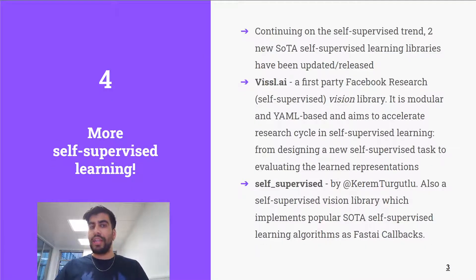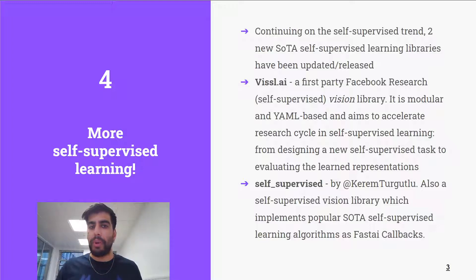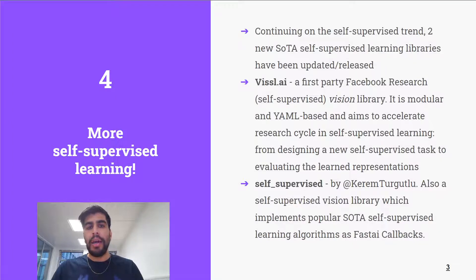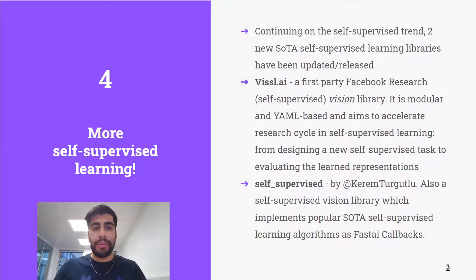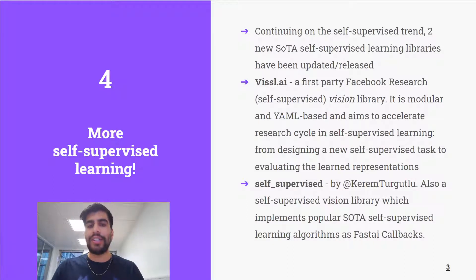On the topic of self-supervised learning, two new state-of-the-art self-supervised learning libraries have been updated or released. The first is Vissl.ai, a first-party Facebook Research self-supervised vision library. It's modular and YAML-based, which means you probably won't be writing any low-level code, and it aims to accelerate the research cycle from designing a new self-supervised task to evaluating learned representations. We also have a community project by Twitter user Keram Turgutlu — a self-supervised vision library which implements popular state-of-the-art self-supervised learning algorithms as fast.ai callbacks.